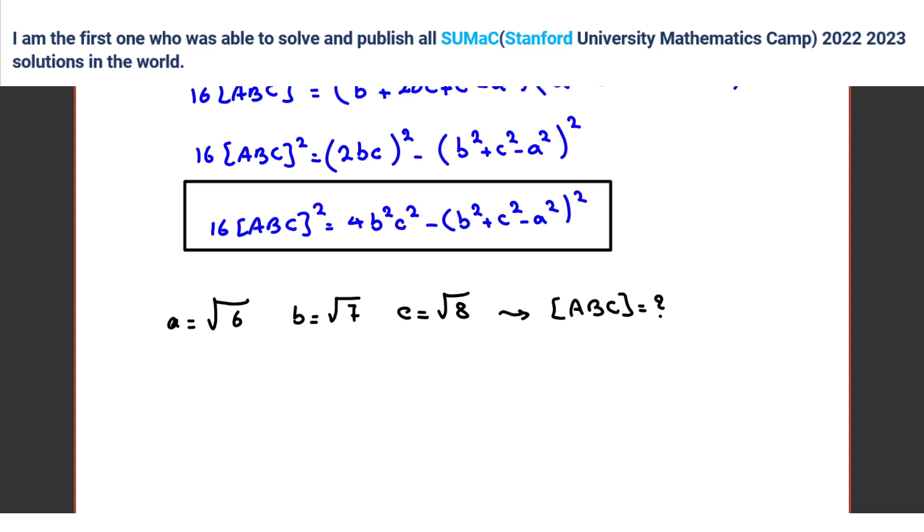1, 4, 3 equals 16 ABC squared. Sum of ABC equals the square root of 1, 4, 3 over 4. So let's write 16 times area squared is what? 4 times 7 times 8, right? Yeah. Minus what? 7 plus 8 minus 6.